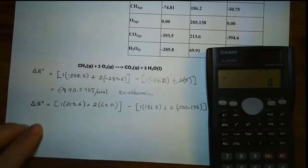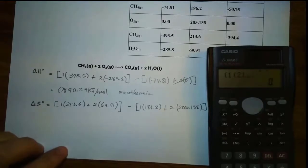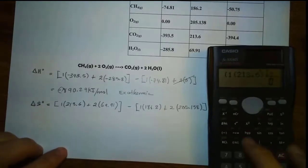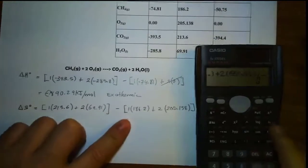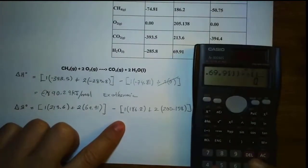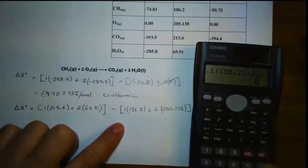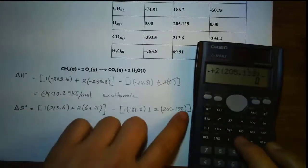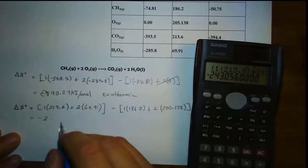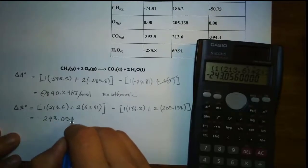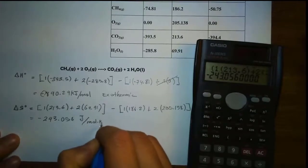Now plug into the calculator — the bracket represents parenthesis. So: parenthesis, 1 times 213.6, parenthesis, plus 2 times 69.91, parenthesis, parenthesis, minus parenthesis, 1 times 186.2, parenthesis, plus 2 times 205.138, parenthesis, parenthesis. The answer is negative 243.056. The unit is joule over mole times Kelvin.